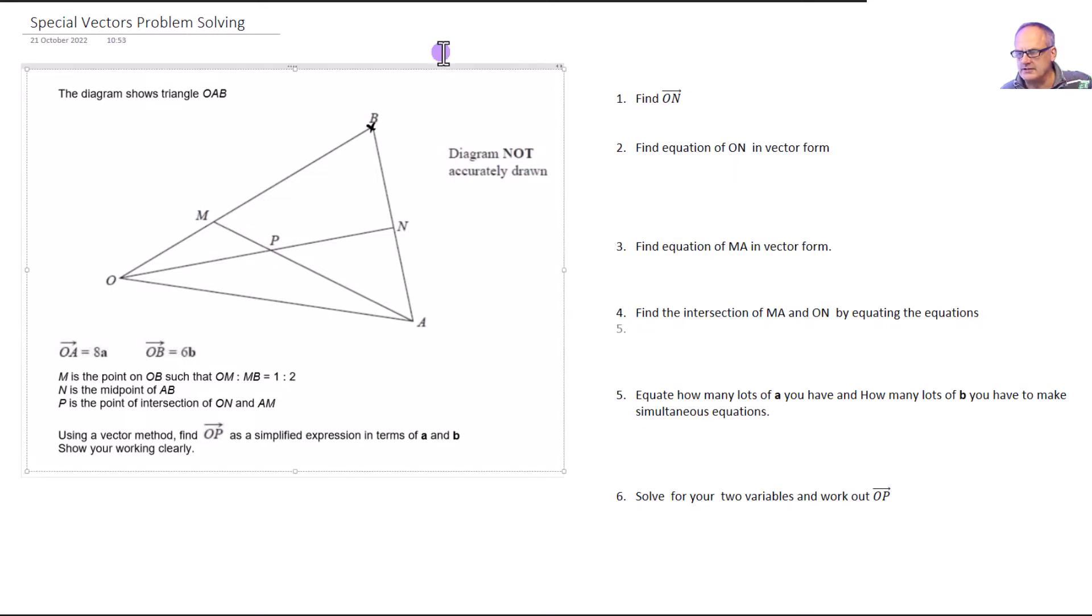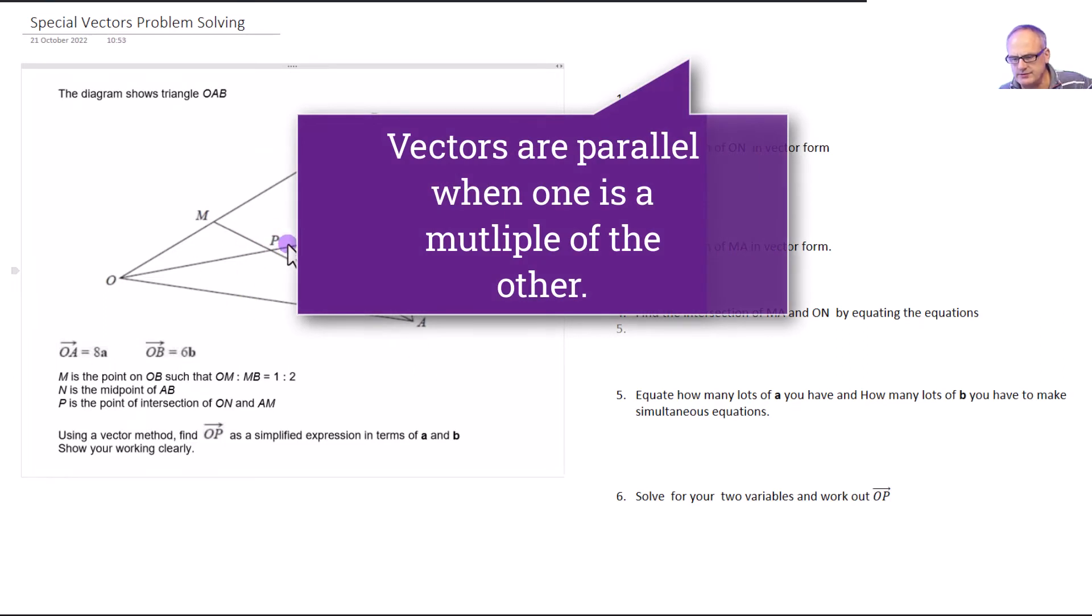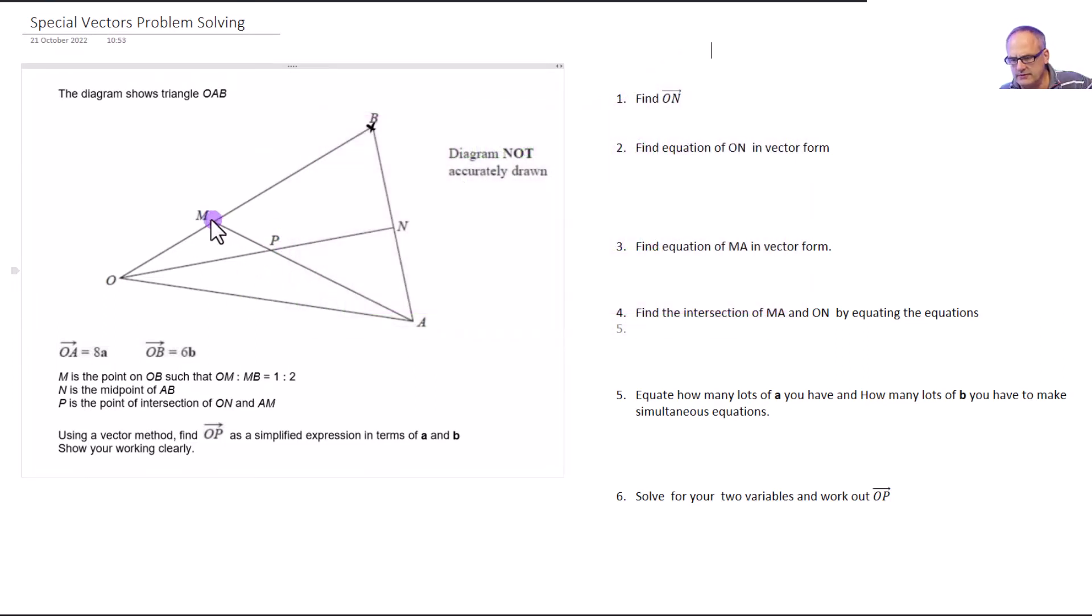So knowing all of that, let's get into this question. We've got a special vectors problem solving and we're going to find this point P. Now the problem with this point P is we don't know how far along ON it is and we don't know how far along MA it is, so we have no ratios to help us. What we're going to do is find a vector equation of the line MA and a vector equation of the line ON, and then we're going to solve those simultaneous equations and find out where they intersect. It's a bit like doing simultaneous equations but a lot more complex because we're doing this in vector form.